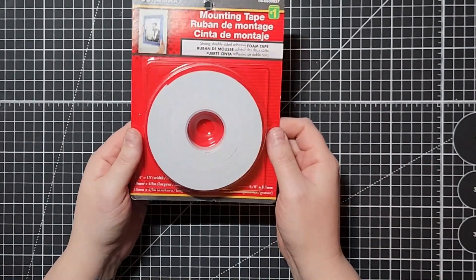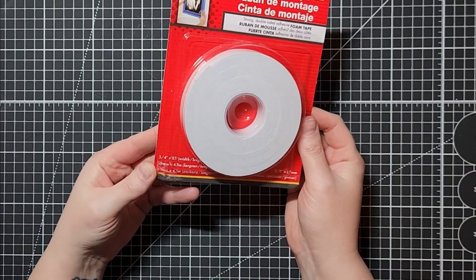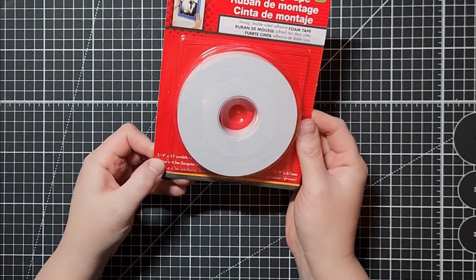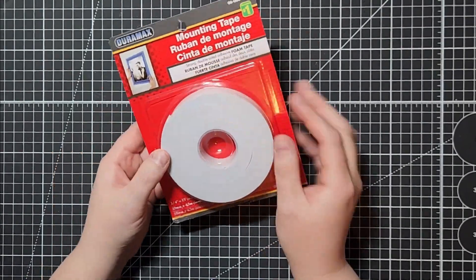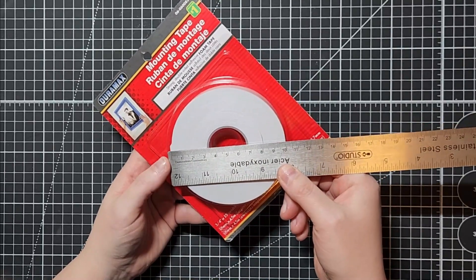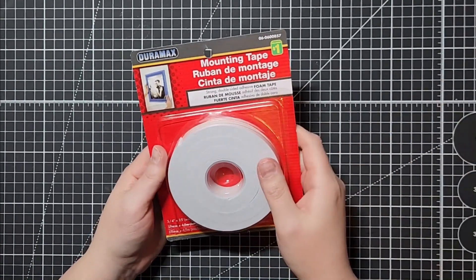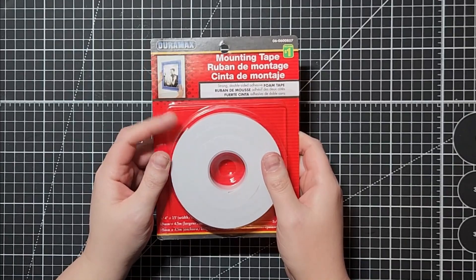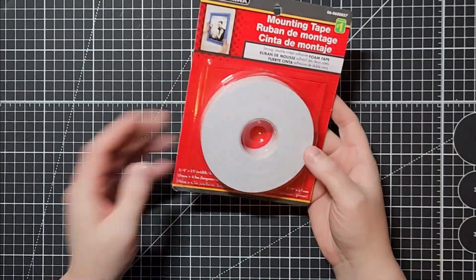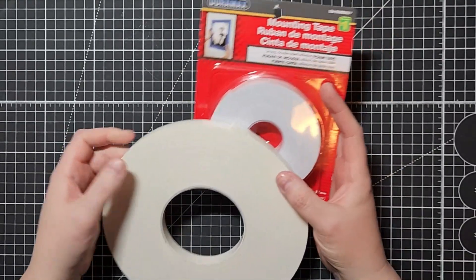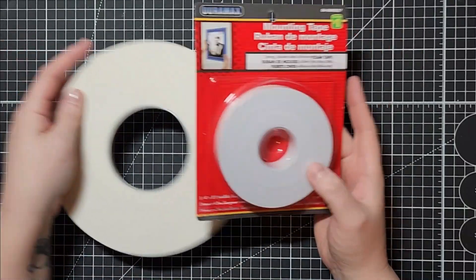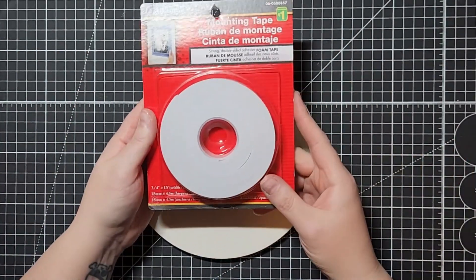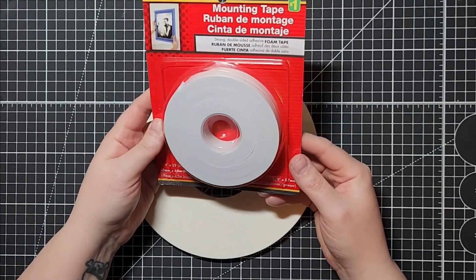Another find at the dollar store is mounting tape which you can use for foam tape. This is three quarter inch wide, you get 15 feet of it and it's about two millimeters thickness. So this would be good for shaker cards. I usually use my big mama foam tape which is thinner, it's probably two thicknesses of this.